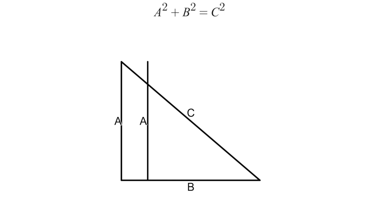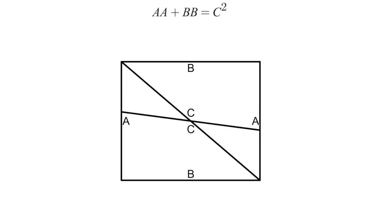A squared is a times a, b squared is b times b, and c squared is c times c.